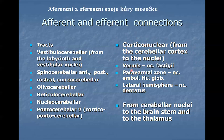Corticonuclear fibers originate in the cortex and terminate in the cerebellar nuclei. Purkinje cells of the vermis project to the fastigial nucleus. Purkinje cells of the paravermal zone send axons to the emboliform and globose nuclei. Purkinje cells in the lateral hemispheres send fibers to the dentate nucleus. This basic topography follows a medial-lateral organization: the most medial cortex projects to the most medial nucleus, and the lateral cortex projects to the dentate nucleus. Fibers leaving the cerebellum from the cerebellar nuclei terminate in the brainstem and thalamus.